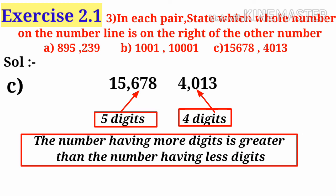The number having more digits is greater than the number having less digits, so 15,678 is greater than 4,013, so 15,678 lies on the right of 4,013.